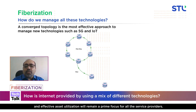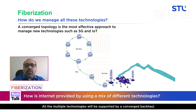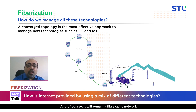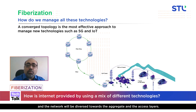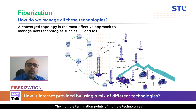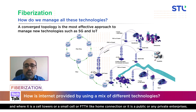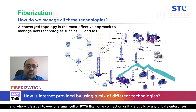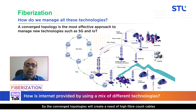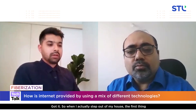In next-generation networks, wireless, IoT, and multiple technologies are going to coexist, and effective asset utilization will remain a prime focus for service providers. All multiple technologies will be supported by a converged backhaul, which will remain a fiber optic network. The network will converge towards the aggregate and access layers. The multiple termination points of multiple technologies — cell towers, small cells, FTTH home connections, or private enterprises — are all connected by a fiber optic cable on a common fiber ring.